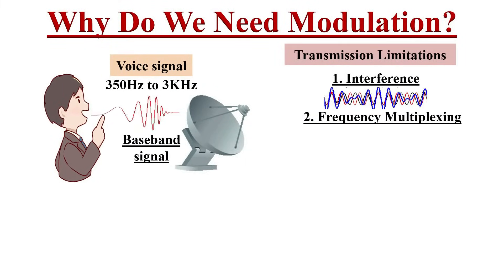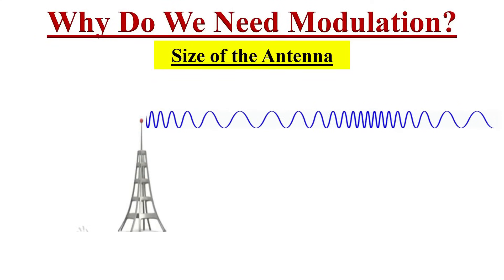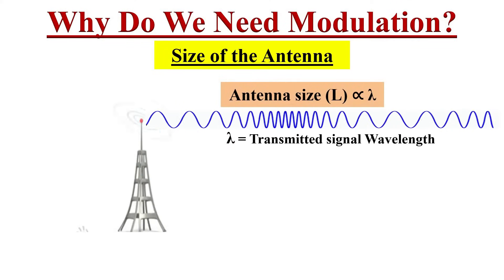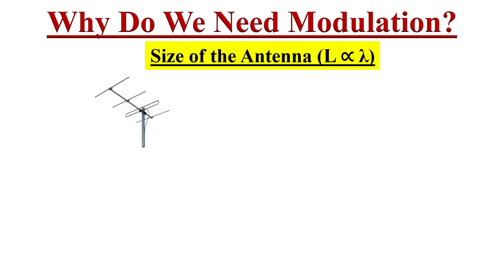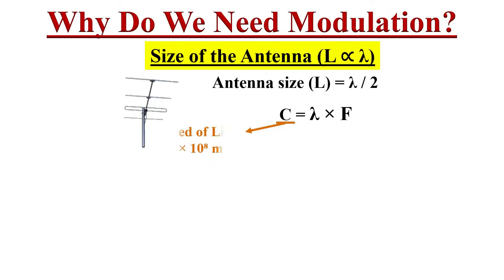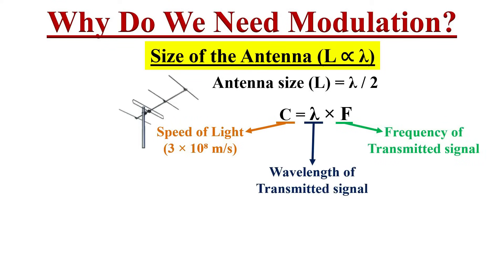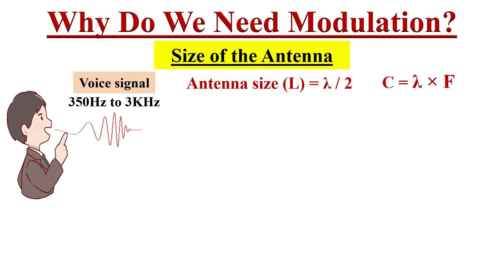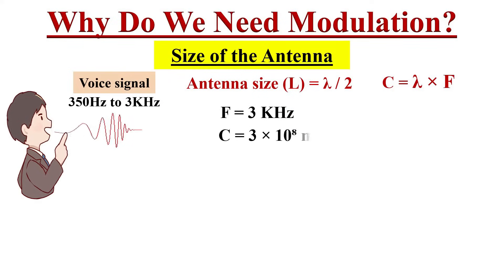The most important reason for modulation is to reduce the antenna size in wireless signal transmission. Ensuring the correct size of antenna is very crucial. Due to the concept of resonant frequency, the size of the antenna is proportional to the wavelength lambda of the transmitted signal. Depending on which type of antenna we are using, it will be a fraction of the transmitted signal wavelength. So let's say antenna size equals lambda by 2. The relationship between frequency and wavelength is given by the expression c = lambda × f, where c is the speed of light and lambda and f are the wavelength and frequency of the transmitted signal respectively.